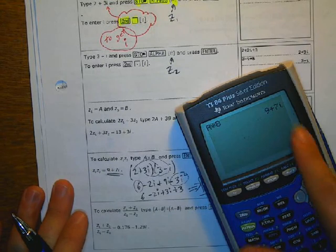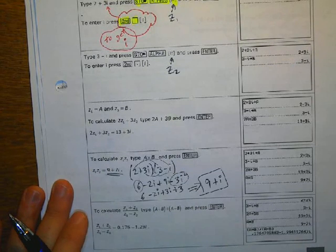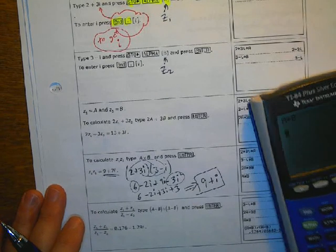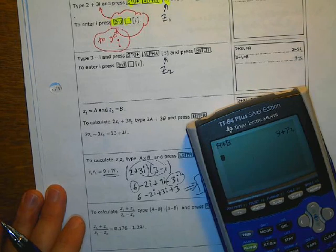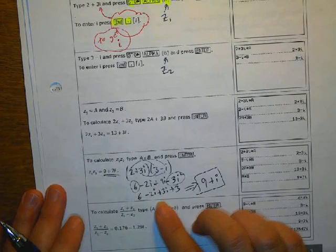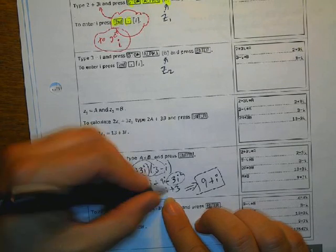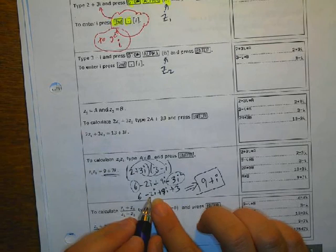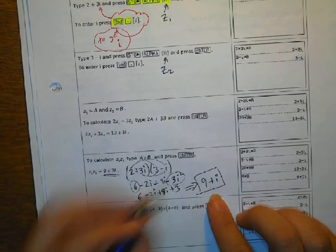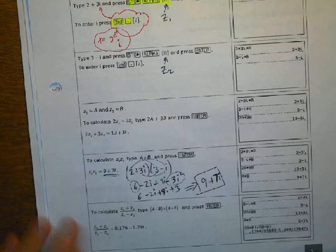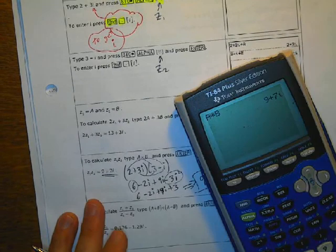And is that the answer that we got? Oh. What happened here? 9 plus 7i. Oh, duh, duh, duh. 9i. Why did I write 3i? That's crazy. Okay. So I've got negative 2i plus 9i is going to give me 7i. Okay.